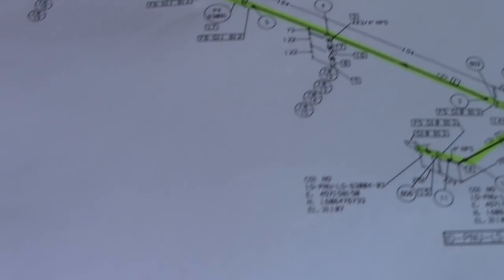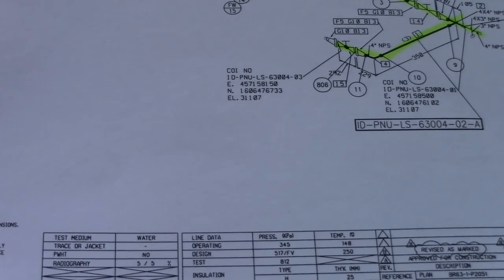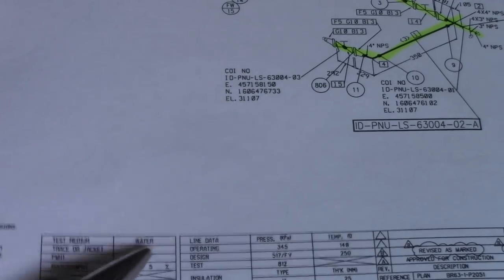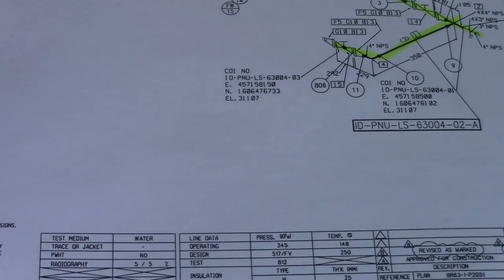Number six is insulation type. We can see the insulation type here in this table. Next is NDT requirements — we will also see this here in the table. How many percent: five percent, ten percent, one hundred percent — that is the NDT requirement. That is number seven.